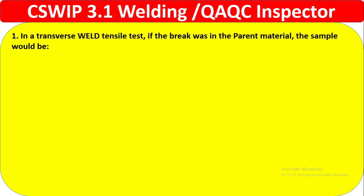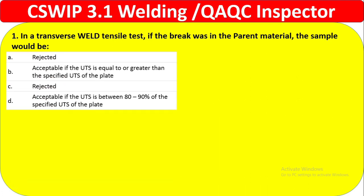Question 1: In a transverse tensile test, if the break was in the parent material, the sample would be — so if you see in the tensile test there is a break in the parent material, it is not in the weld metal. Option A is 'rejected' — definitely it will not be rejected because the break is in the parent material, not in the weld metal. Option B is 'acceptable' — if the UTS is equal to or greater than the specified UTS of the plate, that is correct because the break was in the parent metal.